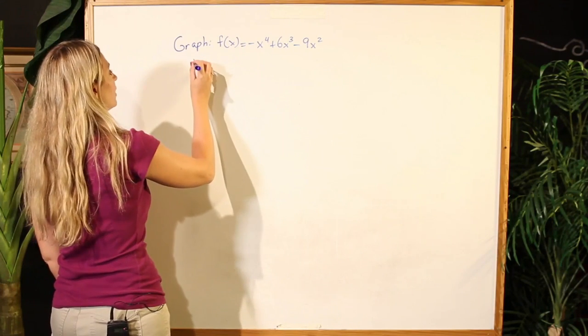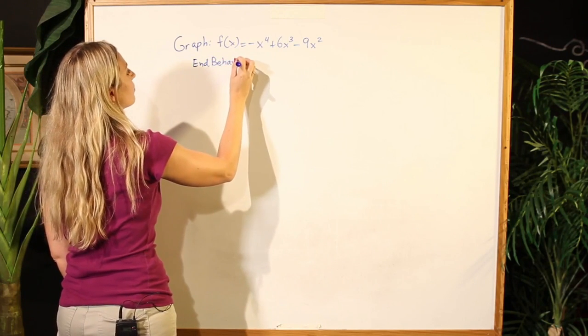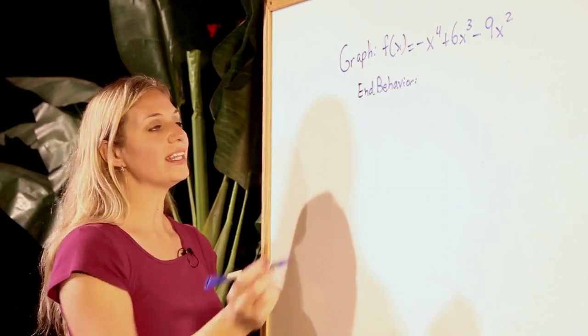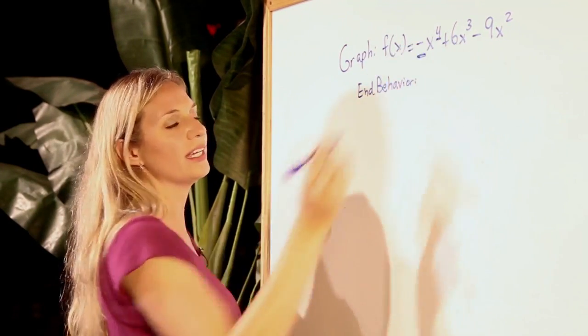Let's begin to graph by discussing this particular polynomial's end behavior. We see that the leading coefficient is negative and the degree is even.